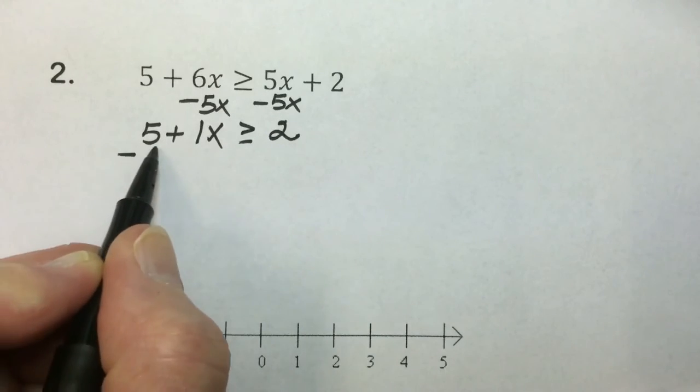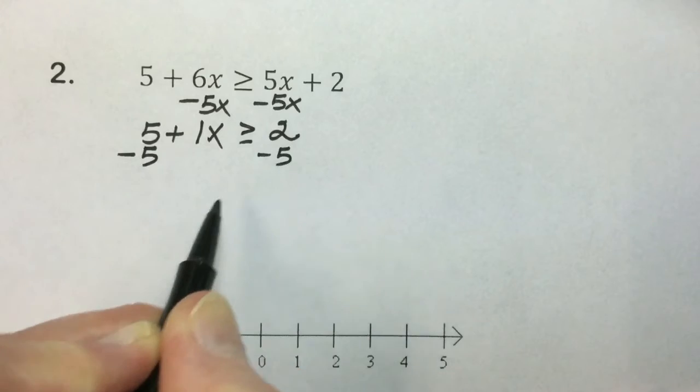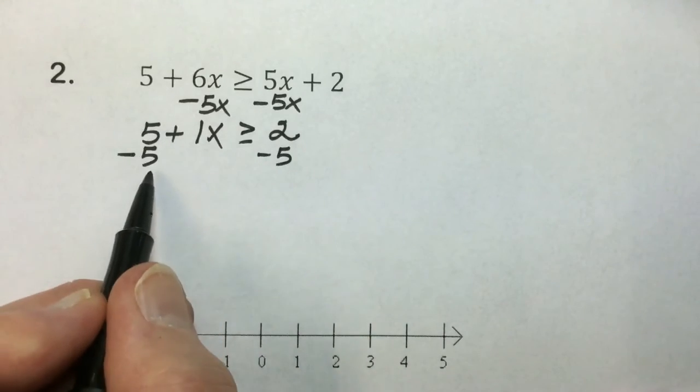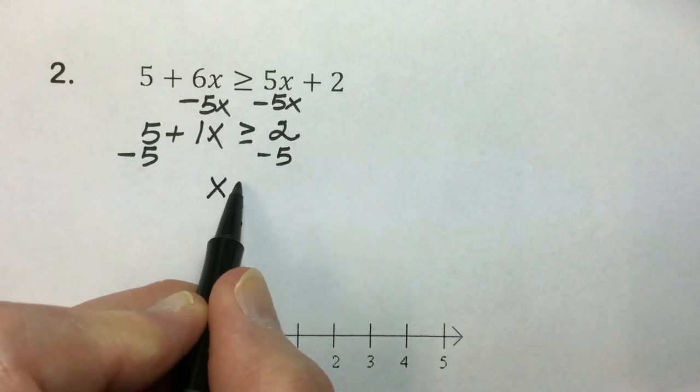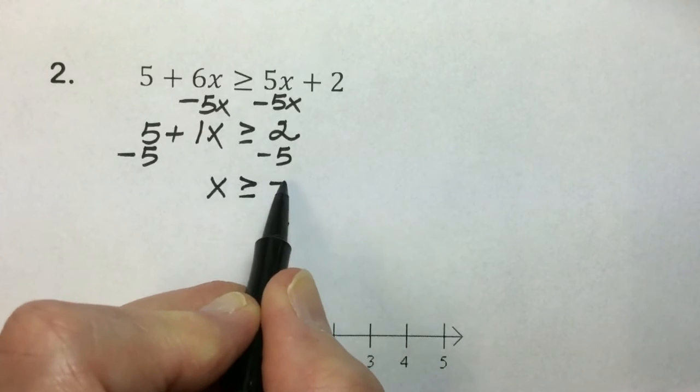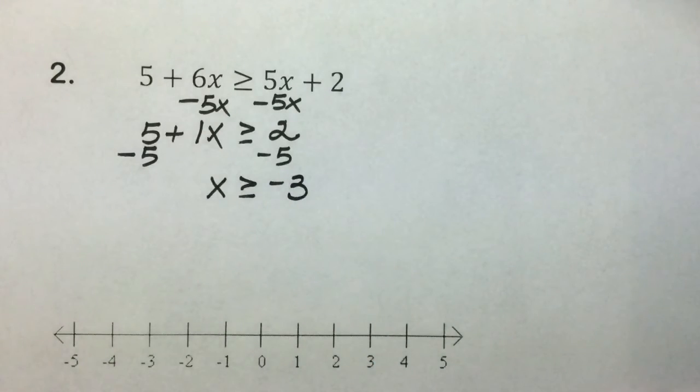Solving for the variable, the only thing left is to subtract 5. The 5s cancel out, leaving 1x greater than or equal to negative 3.